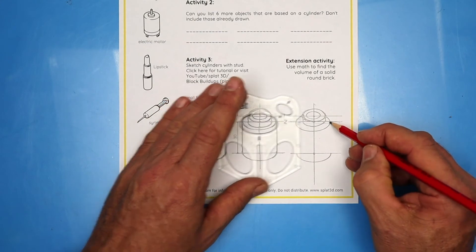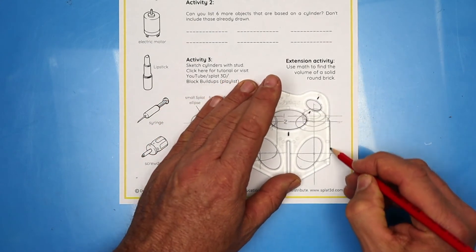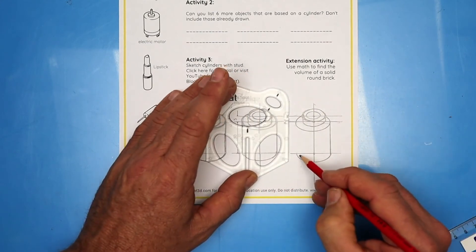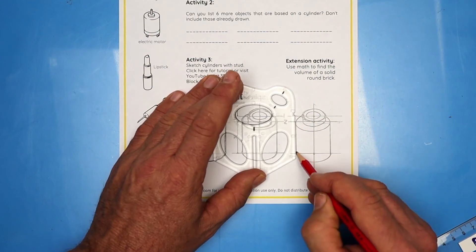And to finish off, we connect the two ellipses together with a straight line. And you have done a fantastic job!